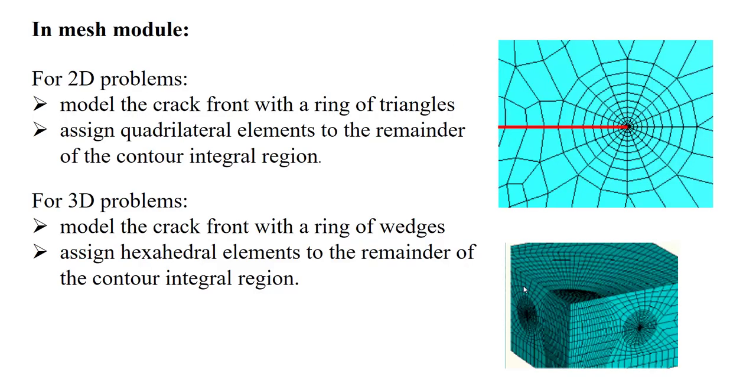After defining the mesh singularity around the crack tip, in the mesh module, for 2D problems, we should use a ring of triangles around the crack and assign quadrilateral elements to the remainder of the contour-integral regions.